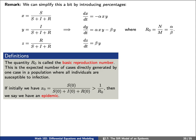We'll give some definitions. The quantity R_0 is called the basic reproduction number. This is the expected number of cases directly generated by one case in a population where all individuals are susceptible to infection. If initially we have an x_0, the initial percentage of those that are susceptible, is greater than 1 over R_0, then we say that we have an epidemic.